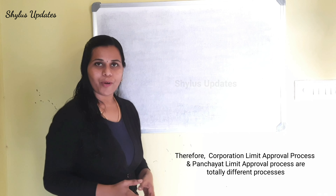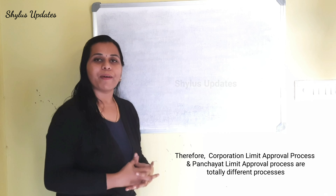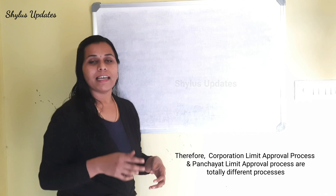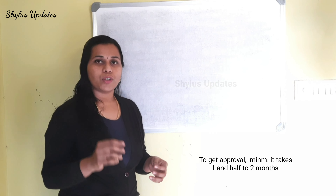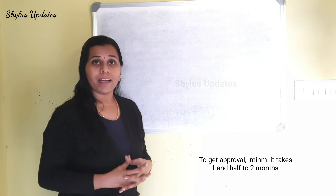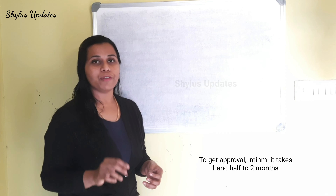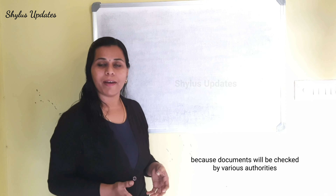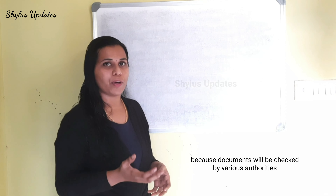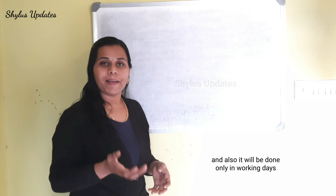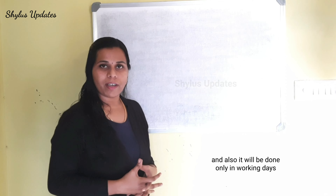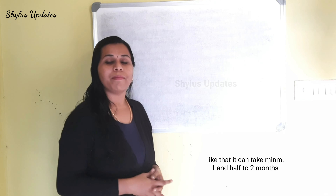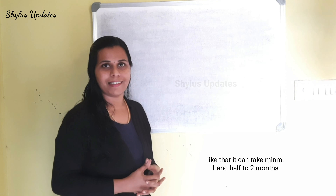Therefore, the corporation limit approval process and the panchayat limit approval process are totally different. To get approval, it takes a minimum of 1.5 to 2 months, because the documents will be checked by various authorities and the work is done only on working days. So it can take a minimum of 1.5 to 2 months.